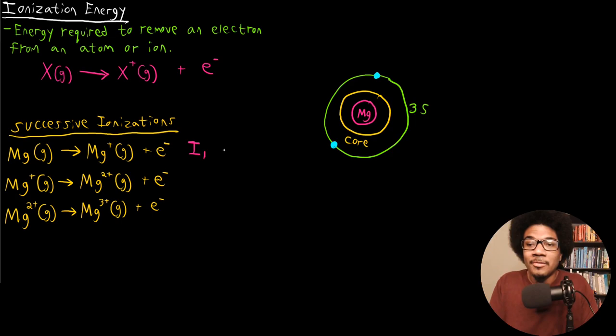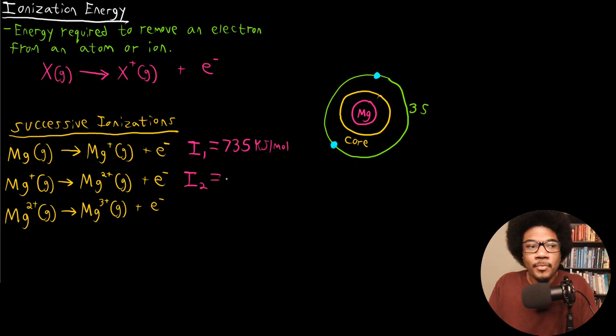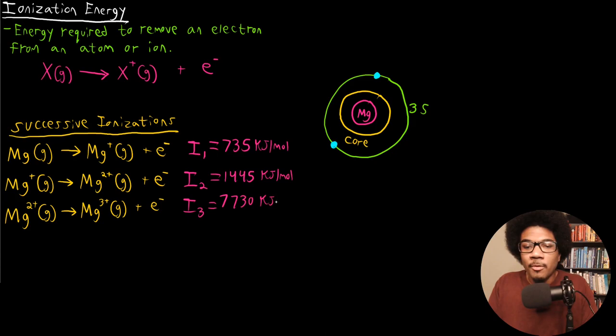The ionization energies for each step: for the first ionization, the ionization energy is 735 kilojoules per mole. For the second ionization, I2, the ionization energy is 1445 kilojoules per mole. And for the third ionization, the ionization energy shoots up to 7730 kilojoules per mole.